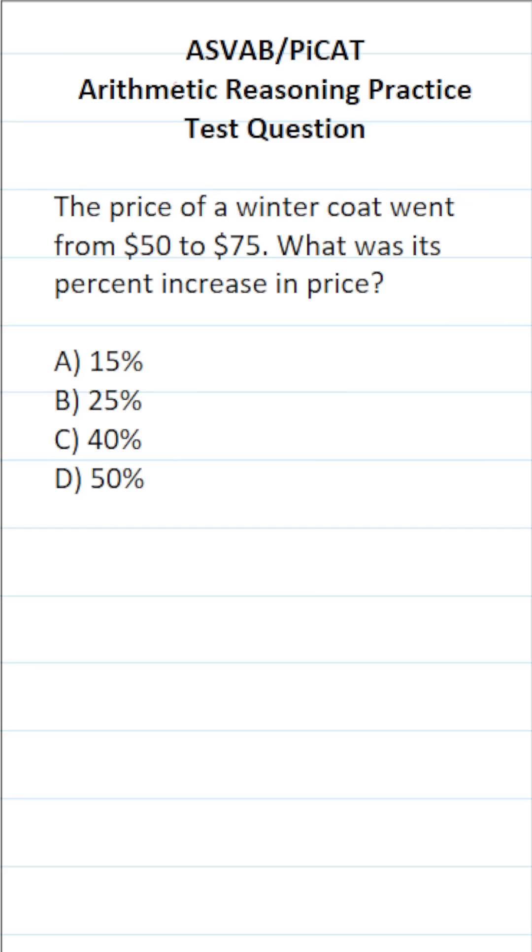In other words, what was its percent change? The percent change formula says you take your new price, subtract that by the old price, divide by the old price, and if you need it—this isn't always necessary—you multiply that by 100 to convert it to a percent.